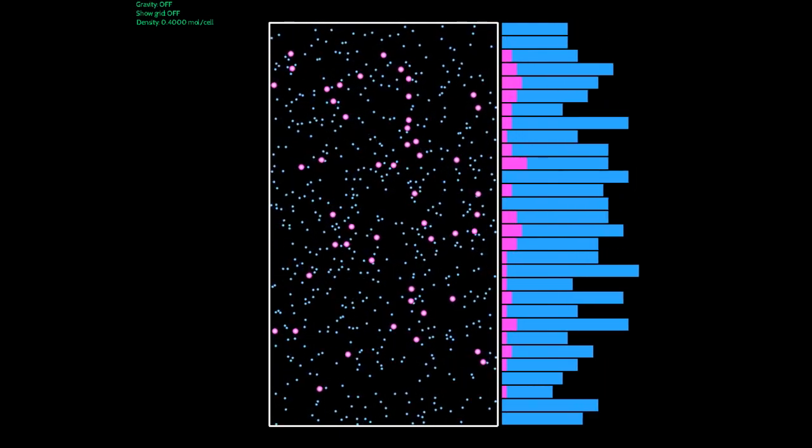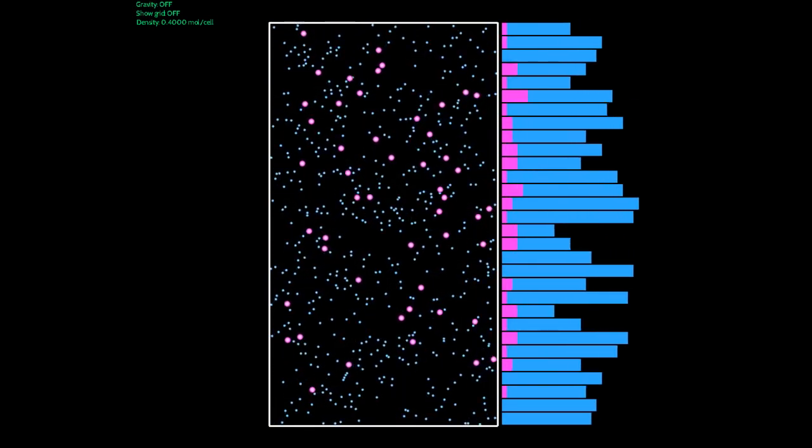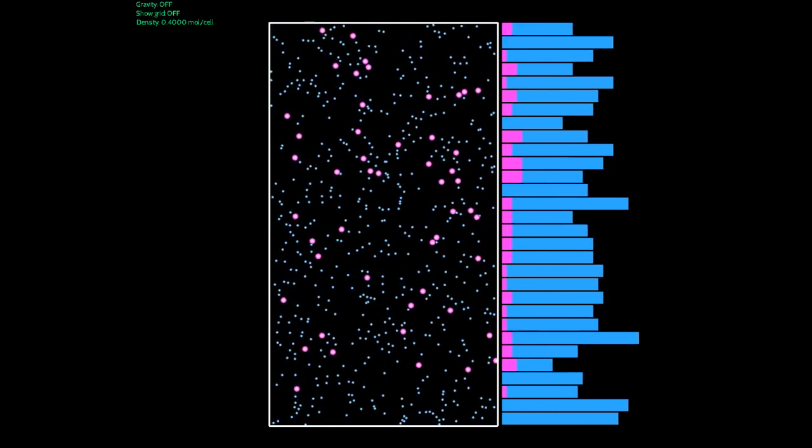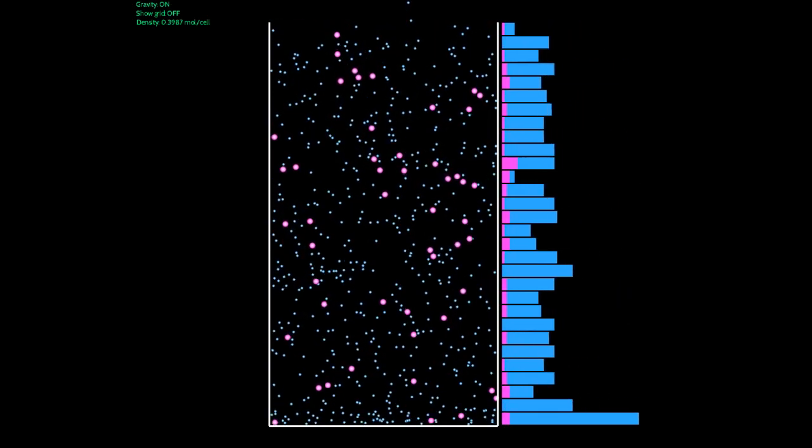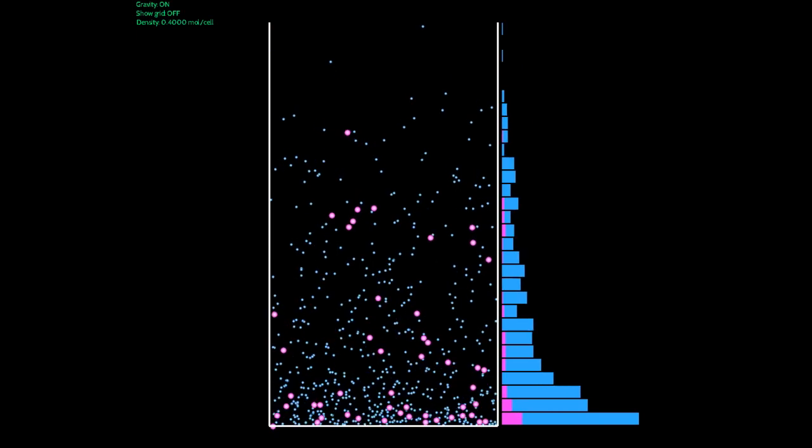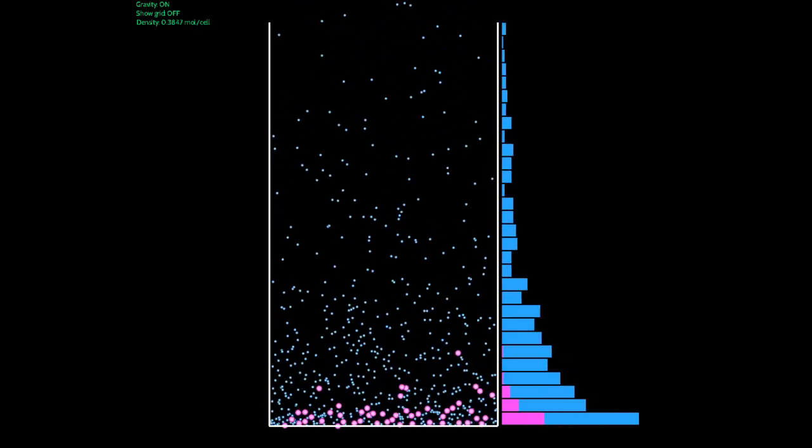Now let's do that again but we're adding another gas, and this gas with the purple molecules is heavier. Now if we enable gravity and remove the upper wall we can see that the purple gas immediately accumulates at the bottom of the container.